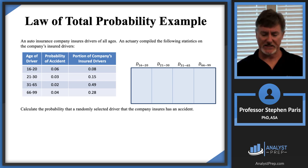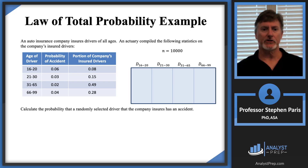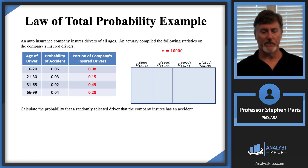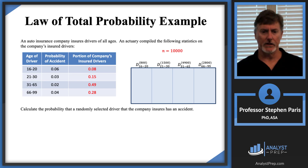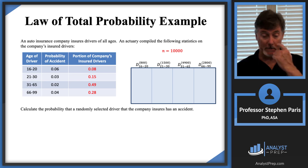With 10,000 drivers being insured, I multiply by the probability of each driver being in a different age group. For instance, the 16 to 20 year olds would be 10,000 times 0.08, giving 800 drivers. The 21 to 30 group would be 10,000 times 15%, giving 1,500 drivers, and so on. The numbers in parentheses above each D represent the number of drivers in each age group.